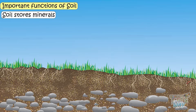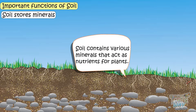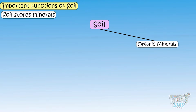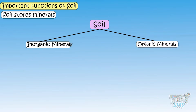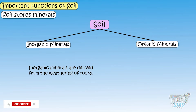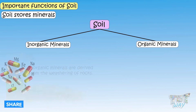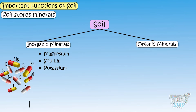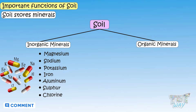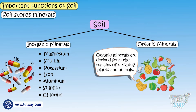Soil contains various minerals that act as nutrients for the plants. Soil contains both organic and inorganic mineral matter. Inorganic minerals are derived from weathering of rocks, and they can be magnesium, sodium, potassium, iron, aluminum, sulfur, and chlorine. Organic minerals are derived from decaying plant and animal remains.